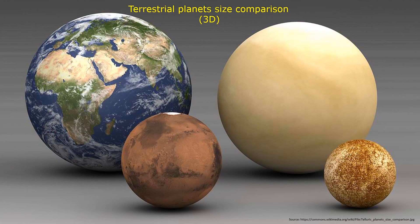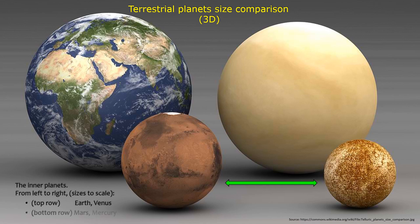Terrestrial planet size comparison — 3D inner planets from left to right, sizes to scale. Top row: Earth, Venus. Bottom row: Mars, Mercury.